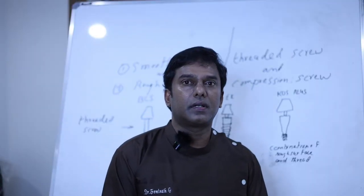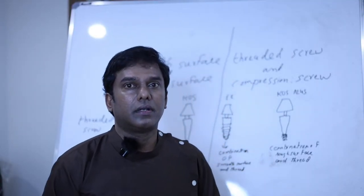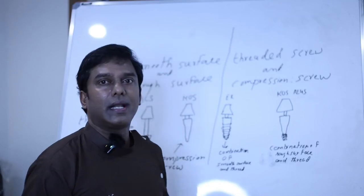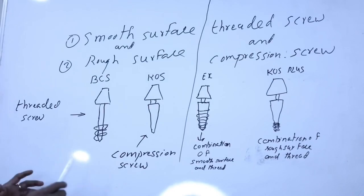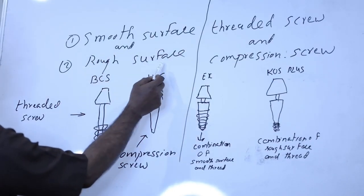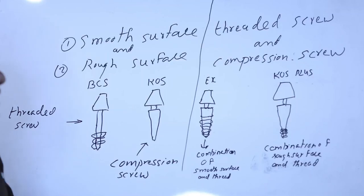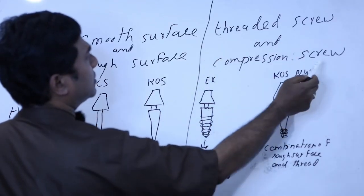By situation I mean that depending upon the quality of the bone, you should be able to select what type of implant is best suited in a particular situation. Before learning about the individual implants, these implants can be broadly classified as smooth surface and rough surface, and also as threaded screws and compression screws.